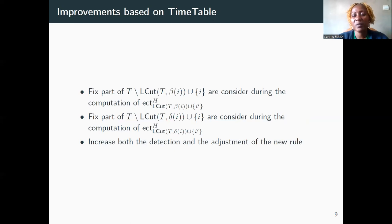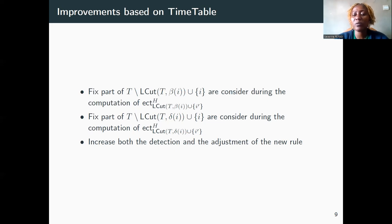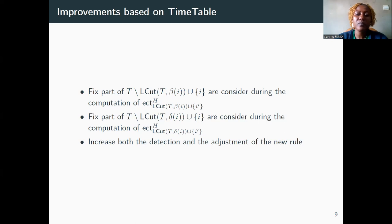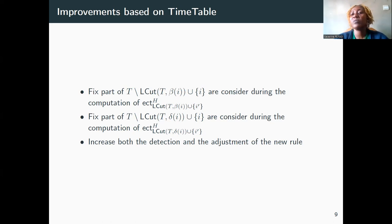To further enhance the filtering power of the new rule, the fixed parts of external tasks which overlap with the selected task intervals are considered. These fixed parts reduce the available free energy, increasing the detection and the adjustment of the rule. To achieve it, new time points corresponding to the latest starting time are introduced. The number of time points moves from 4N+1 to 5N+1, where N represents the number of tasks. The complexity of the resulting algorithm remains quadratic.